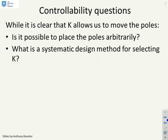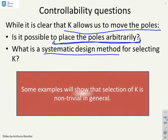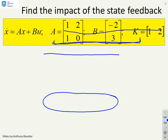Some clear questions then. We know that K allows us to move the poles. But can we place the poles where we want them to be? Can we place them arbitrarily? And is there a systematic design method for selecting the feedback matrix K? We're going to give some examples which show that the selection of K is non-trivial in general.